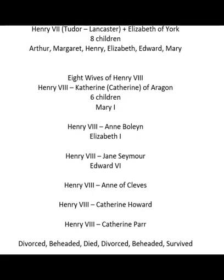Henry was no longer married and the kingdom no longer had a queen. So he went off and found someone else. In this case, Henry found a woman by the name of Catherine Howard. Catherine was a cousin of Anne Boleyn, so she had that Boleyn look. Henry liked her a lot. At the time, Catherine had been seeing another man and was going to marry him — she really didn't want to marry Henry, who was now getting a bit older.